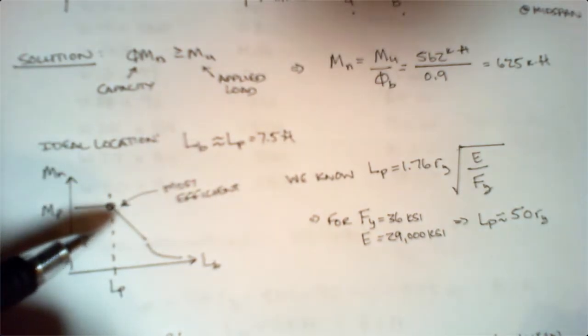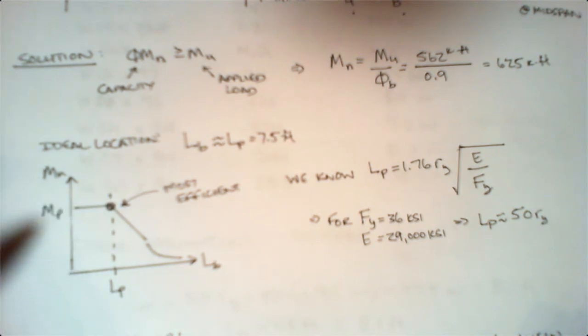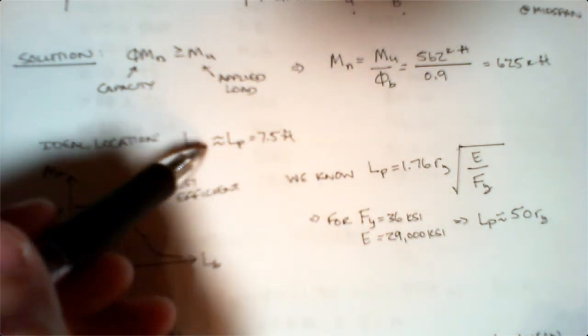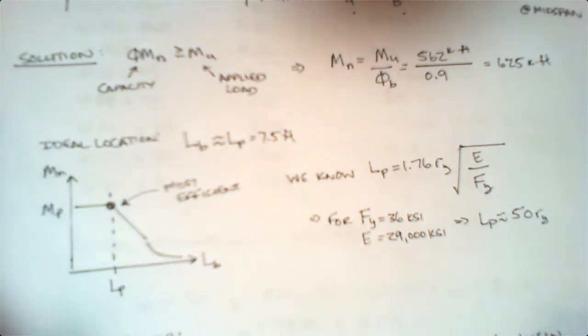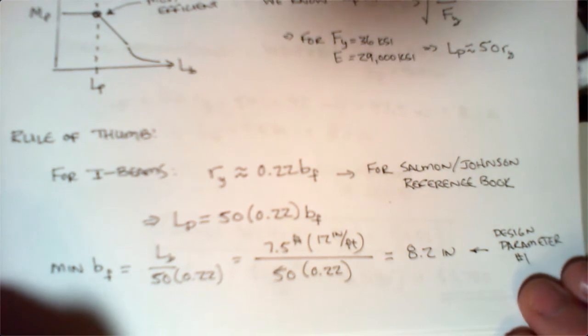For Fy of 36 ksi and E of 29,000 ksi, our Lp is approximately 50 ry. We want to have a little bit of lateral stiffness to make sure we're maintaining ourselves in this region here. That's why we're going to make the assumption that Lb is approximately the same value as Lp.